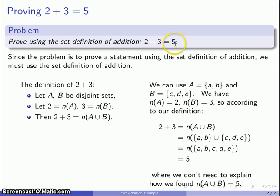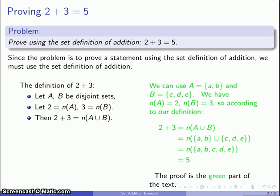Now one final note: what do we need to include to have a complete answer to the statement? What we have to do is we have to include everything that is in green. So all of this is our answer to the question: prove using the set definition of addition. Anything less is not a complete answer.